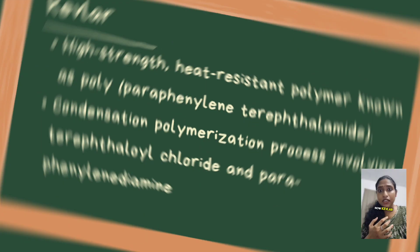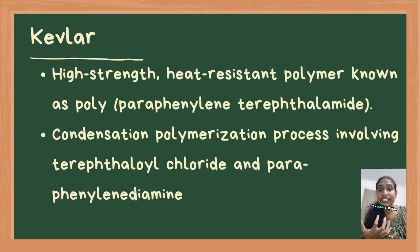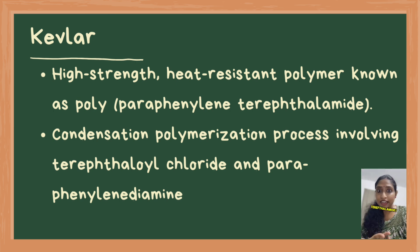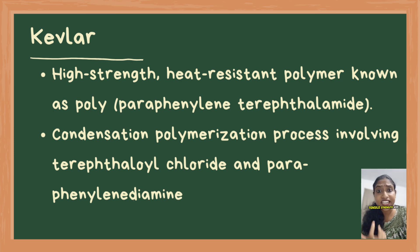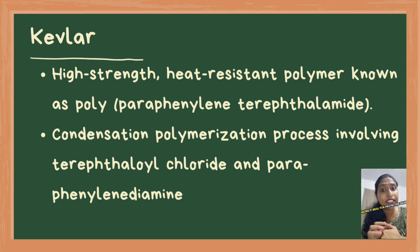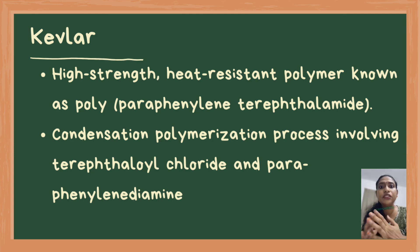Now, Kevlar is a high-strength, heat-resistant polymer known as poly-paraphenylene terephthalamide. It is produced through condensation polymerization of terephthaloyl chloride and paraphenylene diamine. It boasts extraordinary tensile strength and heat resistance, making it ideal for protective gear, aerospace applications and automotive components.